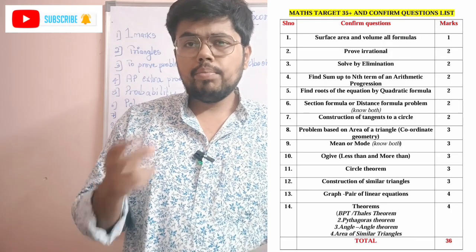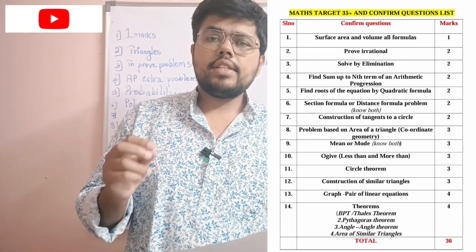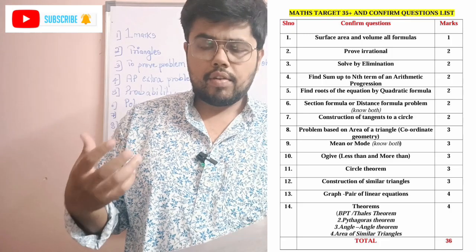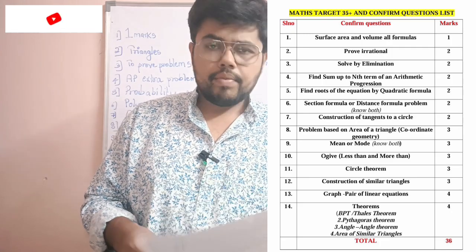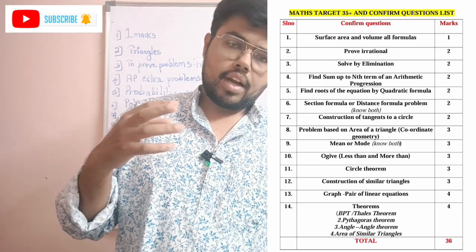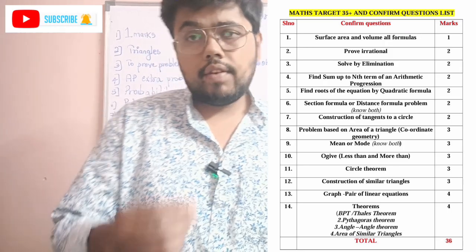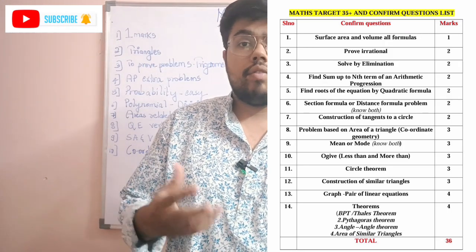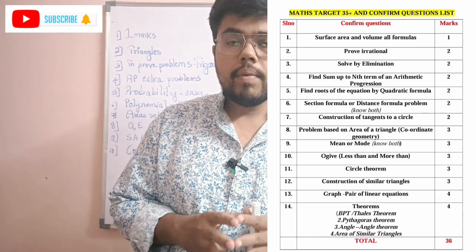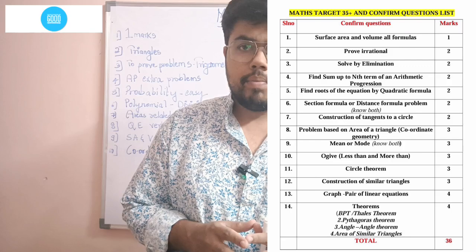Next, circle theorems. There are two theorems — better to know both, but priority is 'tangents from an external point are equal.' Next, graph of a pair of linear equations. And lastly, the four theorems: you should know all four — BPT, Pythagoras, angle-angle, and areas of similar triangles. Any one can come; we cannot predict. If you practice all this, I can definitely assure 40 marks.